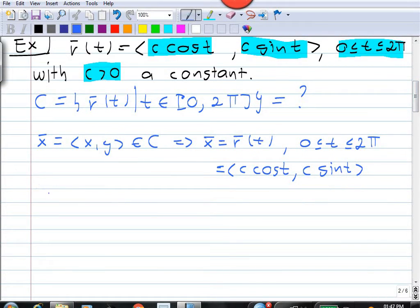Well, one thing we can note is that if we take the x component squared plus the y component squared, that's going to give us c² cos² t plus c² sin² t.